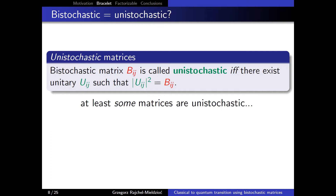That was the motivation. Now let us go to the exact characterization of our problem and the tools we used. The main problem is to check whether a given bistochastic matrix has its quantum counterpart — a unitary matrix. If it does, such a matrix is called unistochastic.